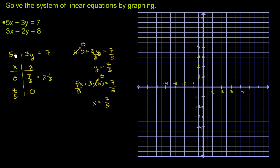Let's graph both of these points and draw the line. We have the point (0, 2 and 1 third) — so that's 0 comma 7 thirds right there. And then we have the point (7 fifths, 0), or 1 and 2 fifths comma 0 — 2 fifths is a little less than a half. So our line is going to look something like this, connecting the dots. I'll draw it as a dotted line.